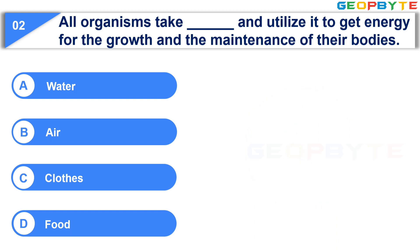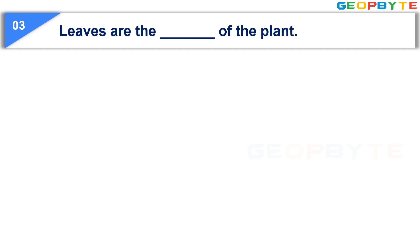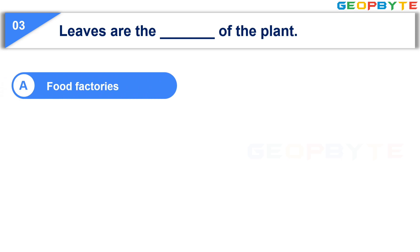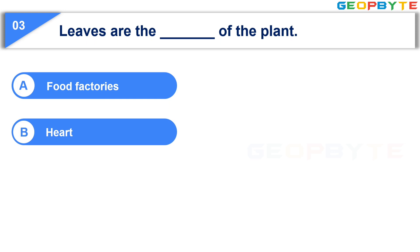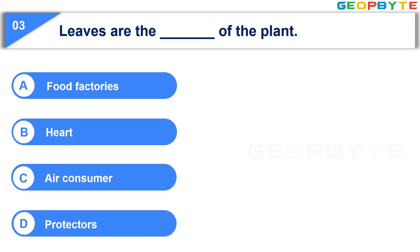Your time is up and the correct answer is Option D, Food. Now let us see the third question: Leaves are the dash of the plant. Option A: Food Factories. Option B: Heart. Option C: Air Consumer. Option D: Protectors. Your time starts now.